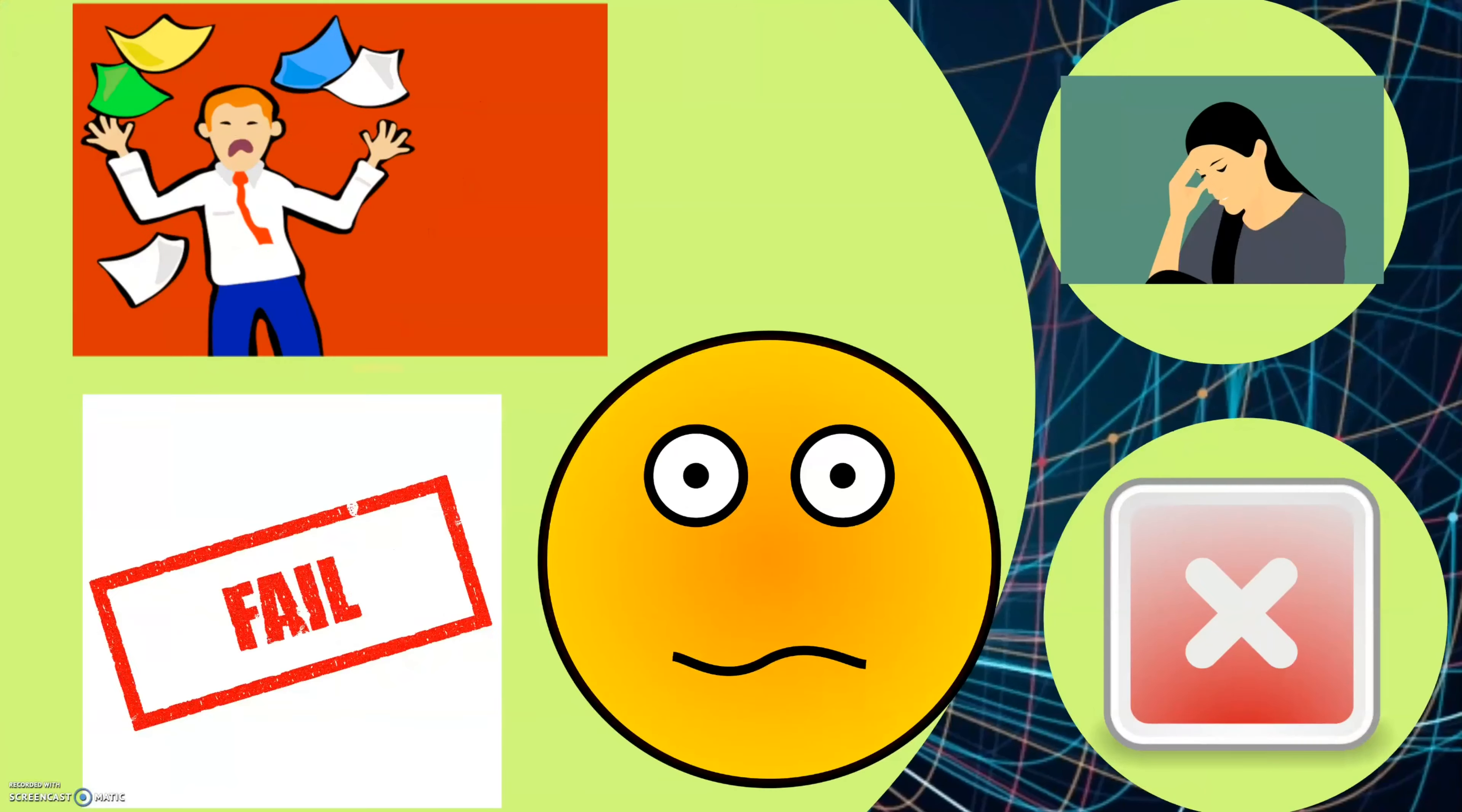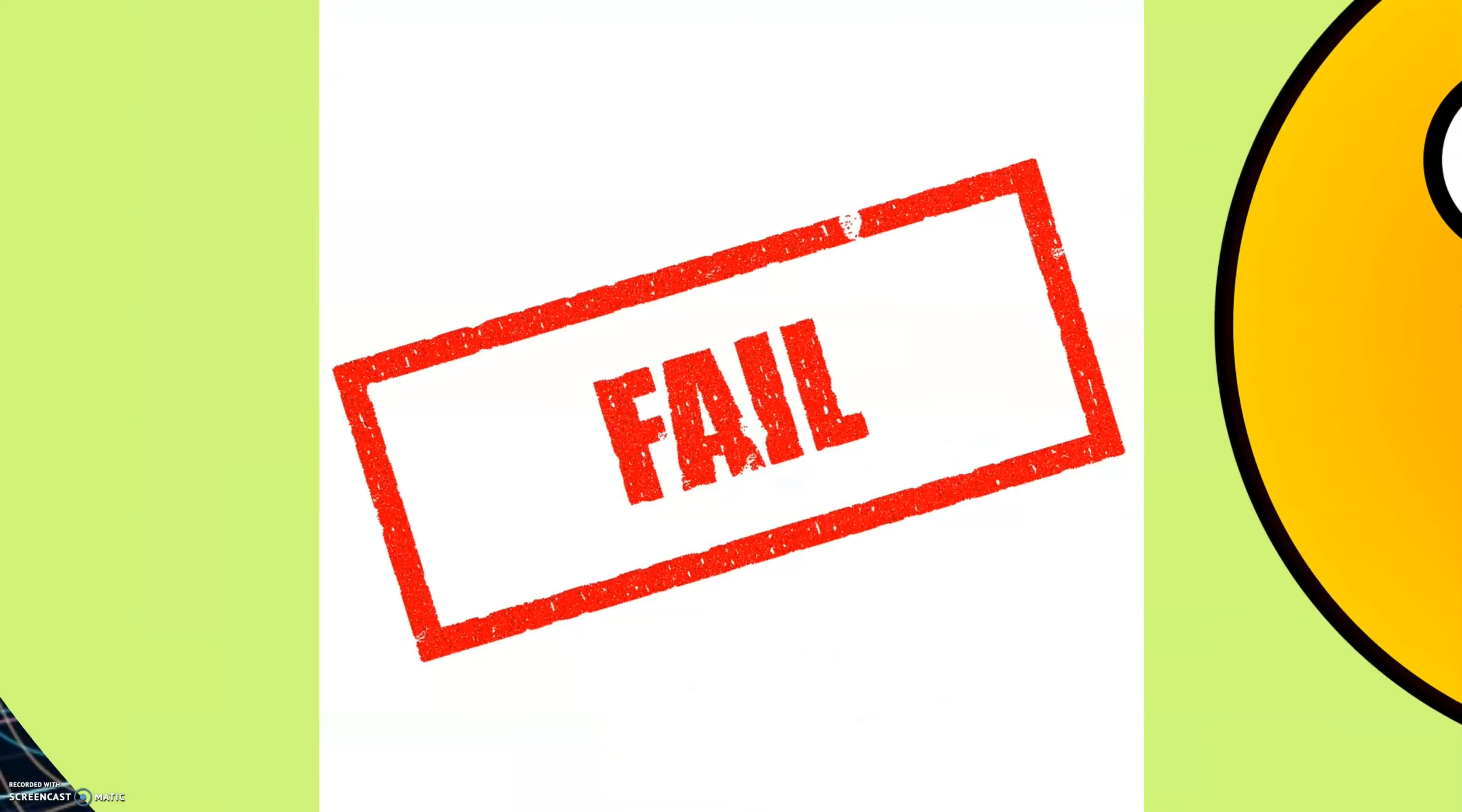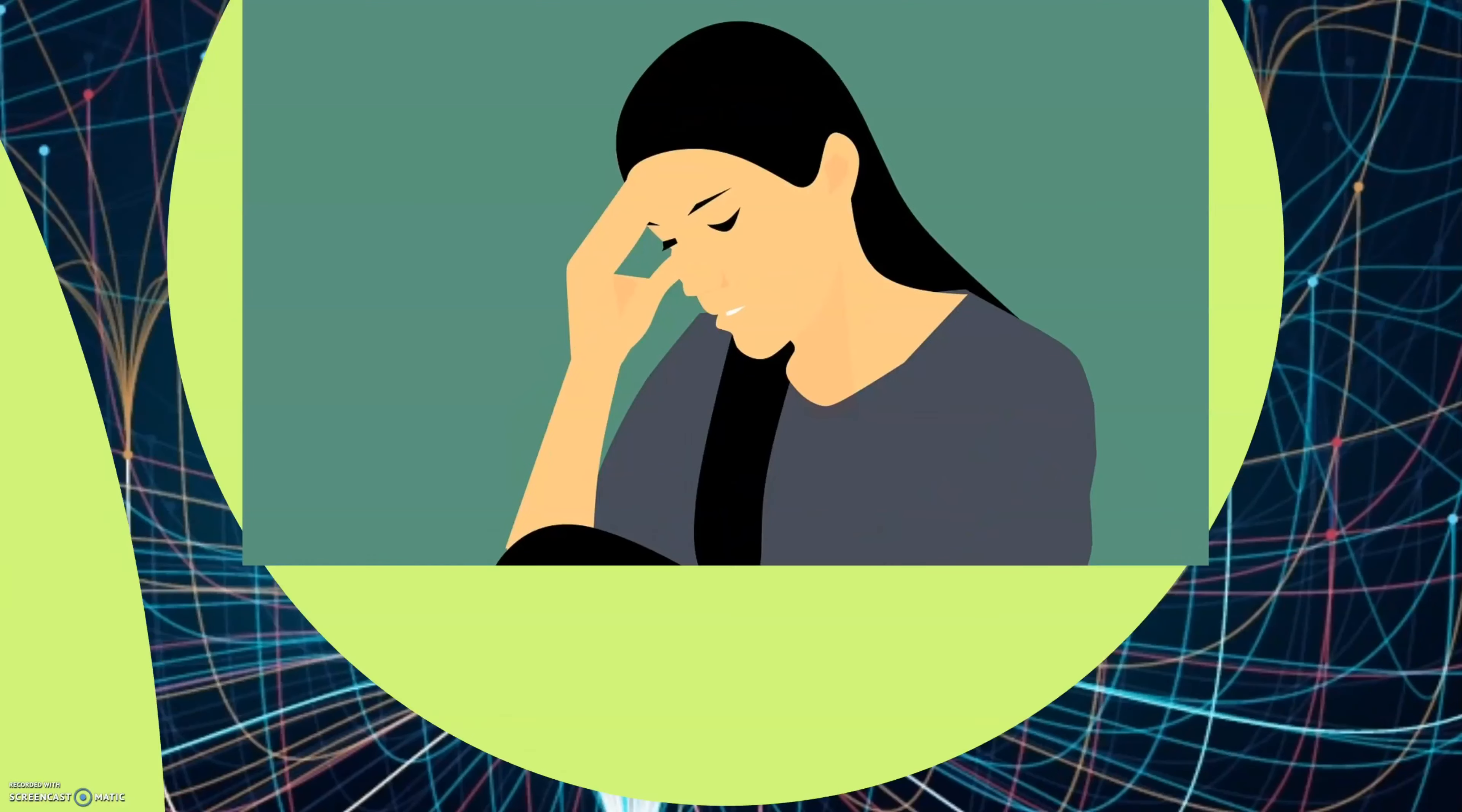On the other hand, focalism also occurs when something awful has happened. Again, we mispredict its impact, so if you failed a test or felt embarrassed, you're likely to obsess over it, believing that you're never going to live through this, but in reality, science says it's never as bad as you make it out to be in your mind.